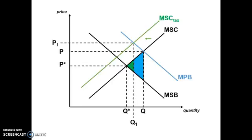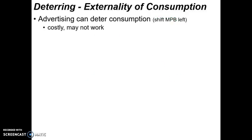If you kept shifting that MSC tax line further left, the wedge would get smaller and smaller, reducing welfare loss more and more — but that also means imposing a heavier and heavier tax, which carries the problems we just discussed. Another option is advertising. The hope is that successful advertising will make people realize that consuming the product is bad for them, and maybe convince them it's bad for society, deterring their consumption. The problem with advertising is it's costly and it may not work — it's hard to change people's habits.